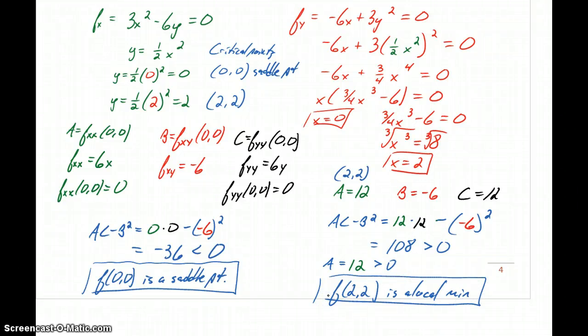So this problem was obviously much more involved. We had to solve a system of equations to get, in this case, these two critical points which are both potential values for our local max or local min. We apply the second derivative test, classify 0, 0 as a saddle point, then repeat that second derivative test with 2, 2 and end up classifying that as a local minimum.